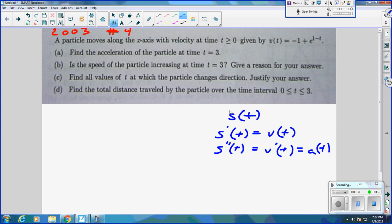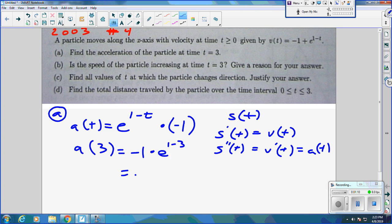Letter A was a gimme. You find the derivative of a(t) by taking the derivative of -1 plus that e stuff. Derivative of -1 is 0. Derivative of e to the crap is e to the crap. And this is the hard part, this is why they have the negative t. Times, chain rule, derivative of 1 minus t is 0. Derivative of -t is -1. So the acceleration formula, when you put 3 in, is this.